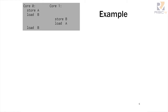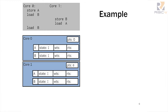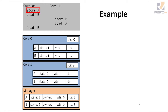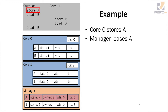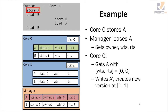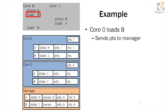Let's go through an example. Reading from top to bottom, we have two cores and a manager. Starting with storing to A: we send a message to the manager, which grants exclusive ownership to core zero and sets fields owner, wts, and rts. We get the cache line, store our new value A-prime, creating a new version at wts and rts equal to one — different from the manager's zero/zero. Core zero also updates its logical time to pts equal to one.